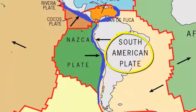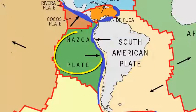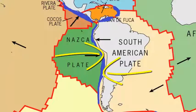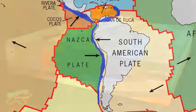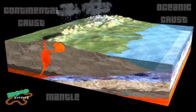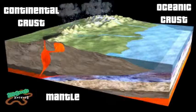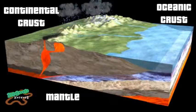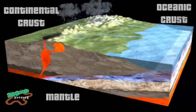The South American plate is continental, whereas the Nazca plate is oceanic. The continental crust is less dense than the oceanic one, so it forces the oceanic plate underneath it when the two collide, in a process known as subduction. In this case, the Nazca plate is subducted under the South American plate, where it melts upon entering the mantle. This creates a large depression known as an oceanic trench.